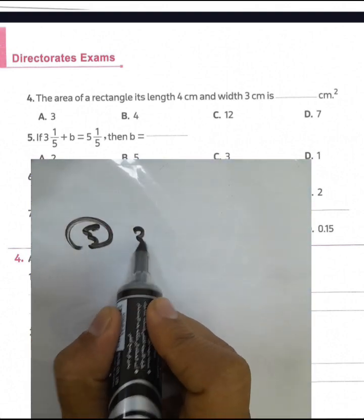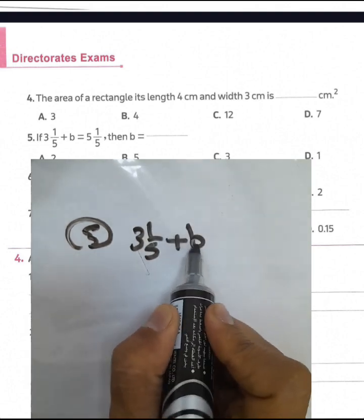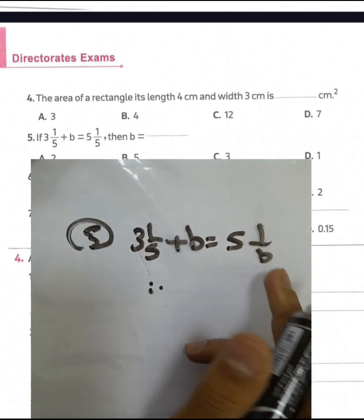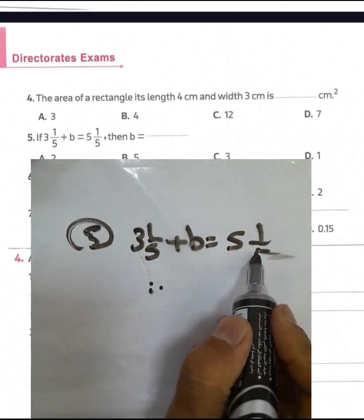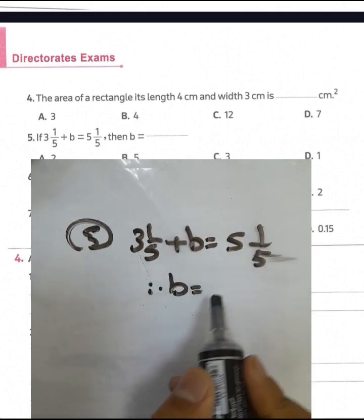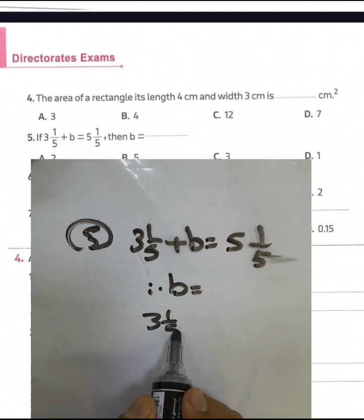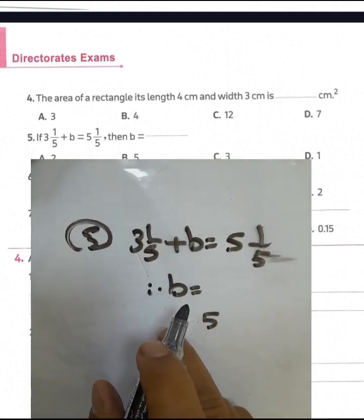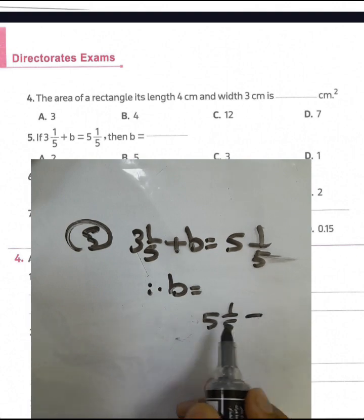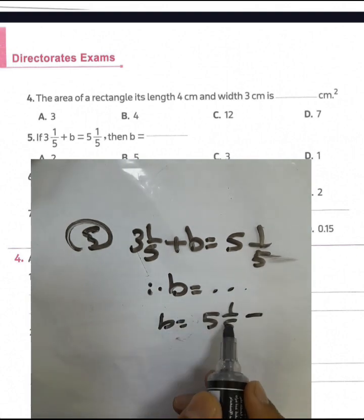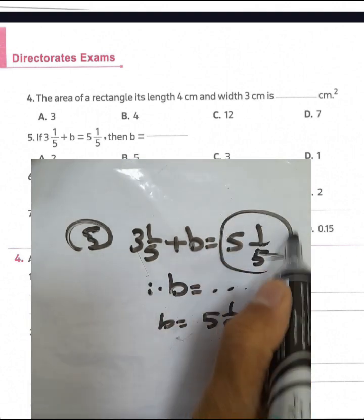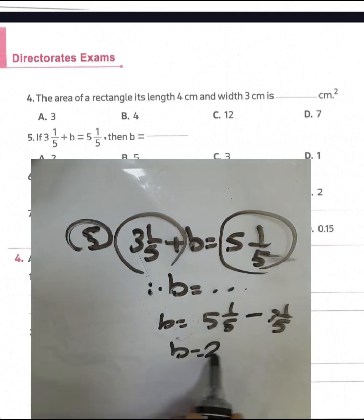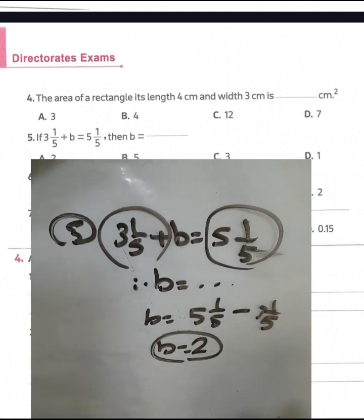Question number 5: if 3 and 1 over 5 plus P equals 5 and 1 over 5, then we find the value of P by finding the difference between them. 5 and 1 over 5 subtract 3 and 1 over 5 equals 2. So the value of P equals 2.